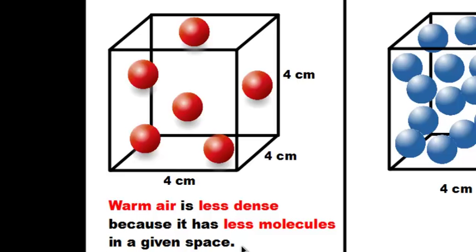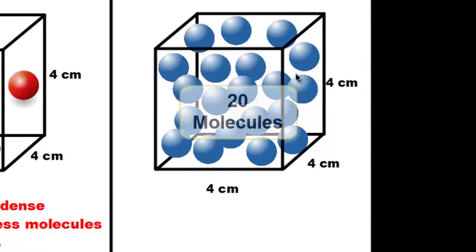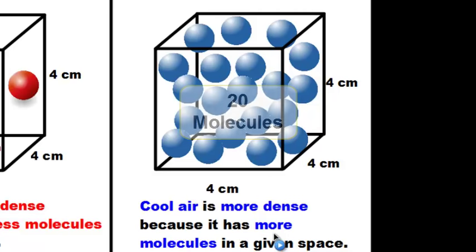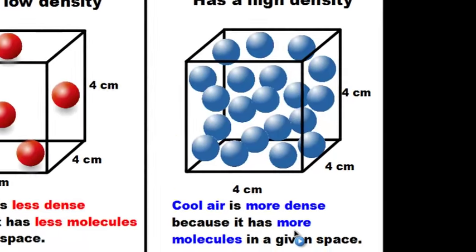As you can see, we have six molecules of warm air here. Now if you look over to the right side of the screen, you'll notice that we have many more molecules. We actually have 20 molecules in this cube. So as a result, cool air is going to be more dense because it has more molecules in a given space. That's the basics as to why warm air and cool air have different densities, but let's take a look as to what actually goes on to make warm air less dense and cool air more dense.